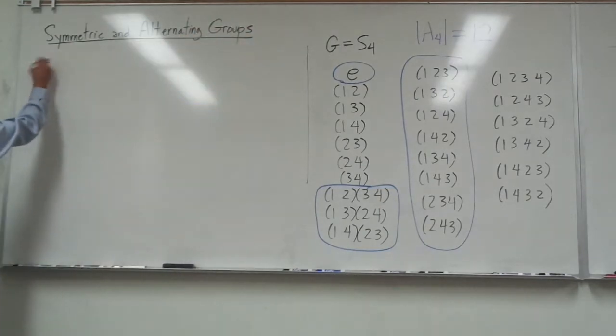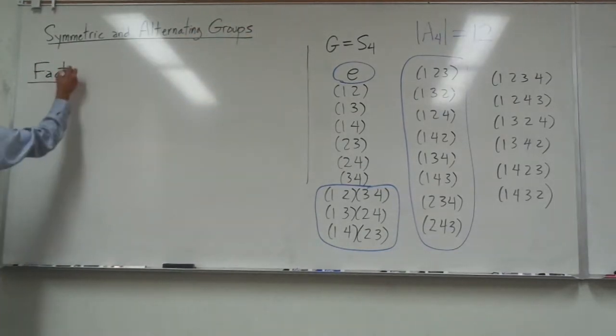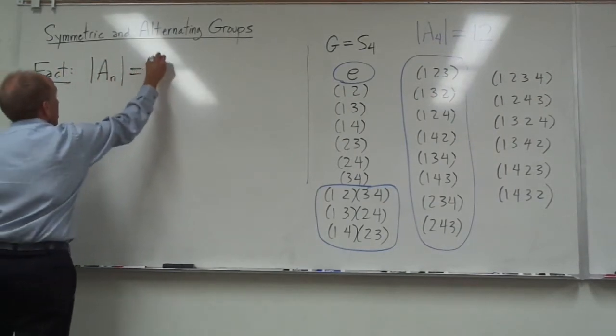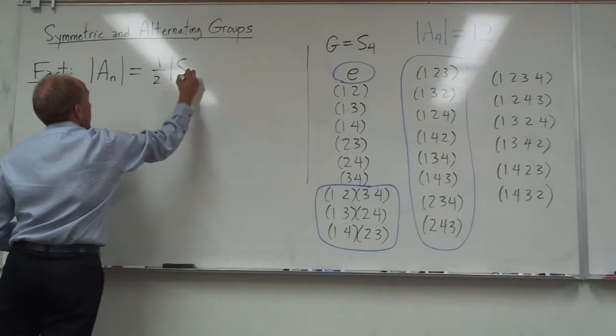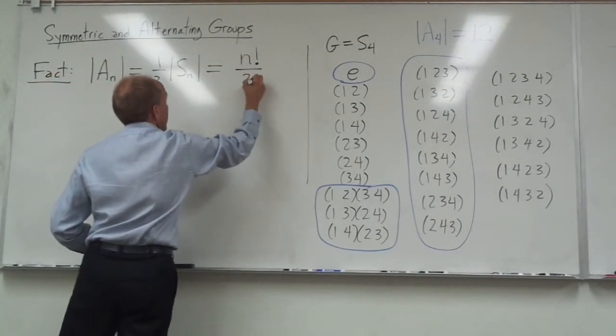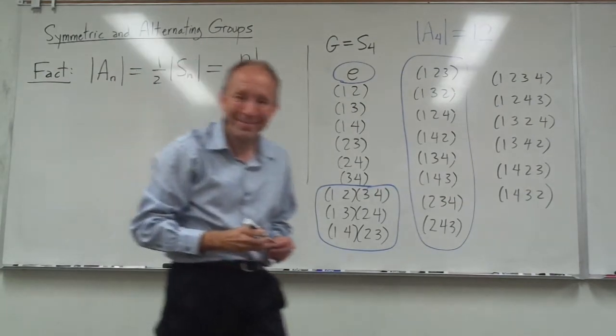It turns out that that is in fact always the case. The size of An is always one half of the size of Sn. In other words, n factorial divided by 2.